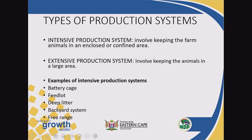Intensive production system involves keeping farm animals in an enclosed or confined area. But when we talk about extensive production system, it involves keeping the animals in a larger area.